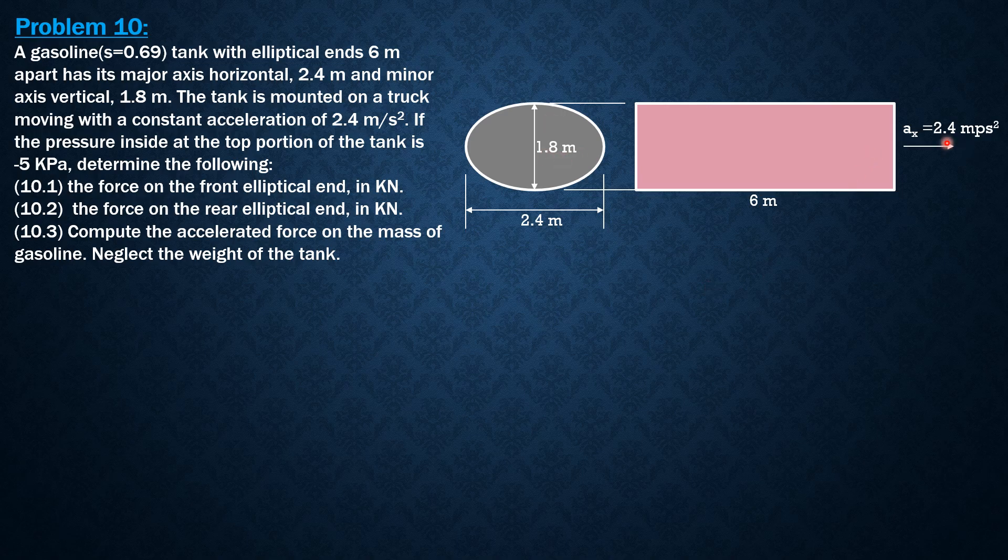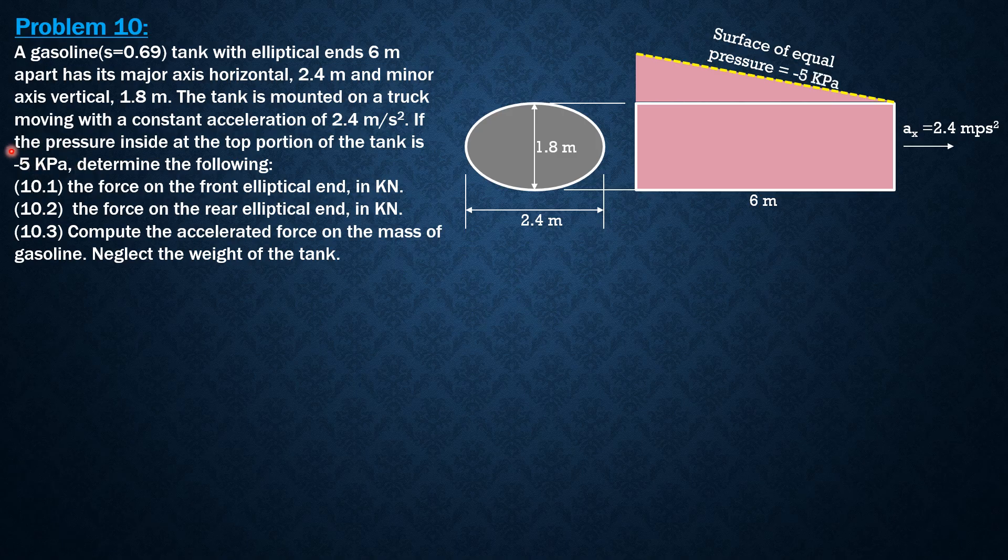So as a result of this acceleration, it will assume a surface here. But take note that this surface has an initial pressure of negative 5. So that's why we call this surface the surface of equal pressure where the pressure is negative 5. If there's no mentioned pressure or the pressure is 0, then that would be the surface of 0 pressure. So in this case, it is negative 5. So to answer, let's call this theta and let's call this distance y. We need y.